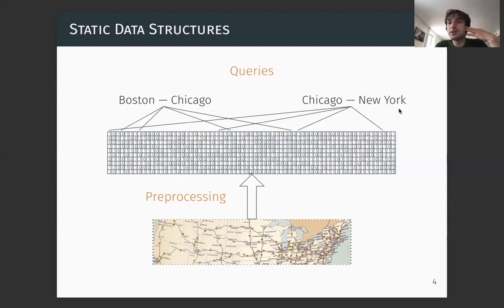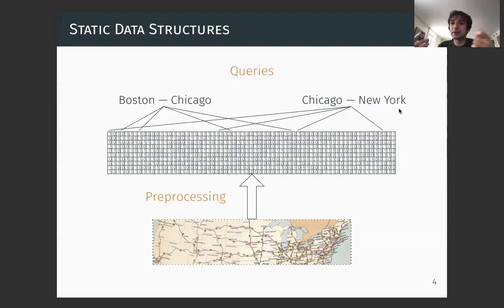We assume that you know all the queries in advance — you know all pairs of cities in advance. Typically, the number of queries is polynomial in the input length; it may be a huge polynomial like n to the 10, where n is the input length, but it's still a polynomial.